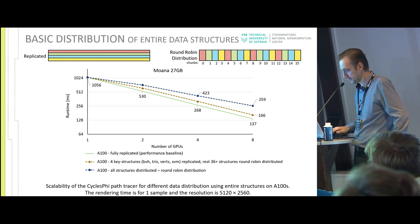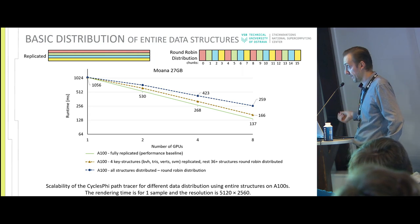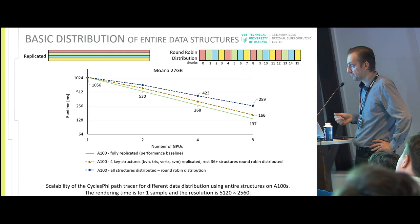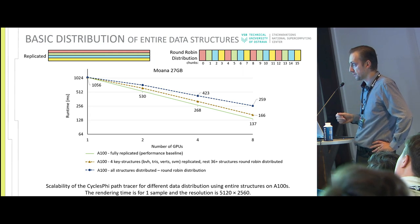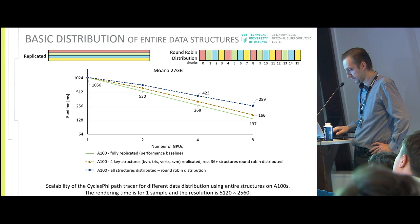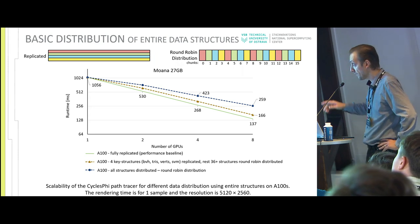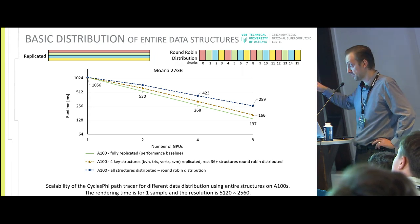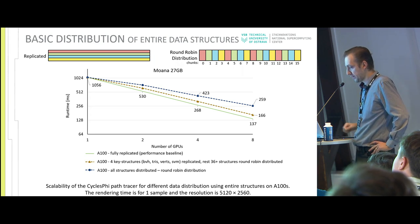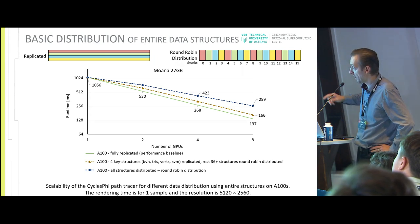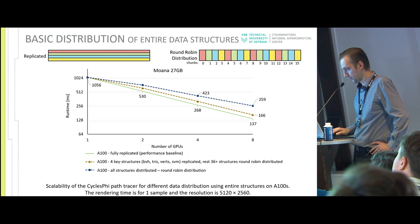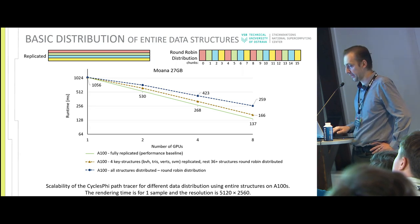If we fully replicate the four key structures — BVH, triangles, vertices, and shaders — we get much better rendering time. On eight GPUs, we are very close to the fully replicated scene performance. This is an advantage of the NVLink interconnect.